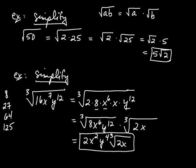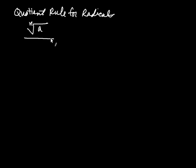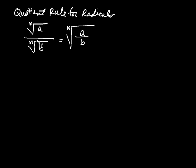Just like there is a product rule, there also is a quotient rule. The quotient rule for radicals looks like this: the nth root of a divided by the nth root of b, as long as they have the same indices, gives you the nth root of a divided by b. It's just like the product rule, except you combine the numerator and denominator into one large quotient and then take the nth root of that.